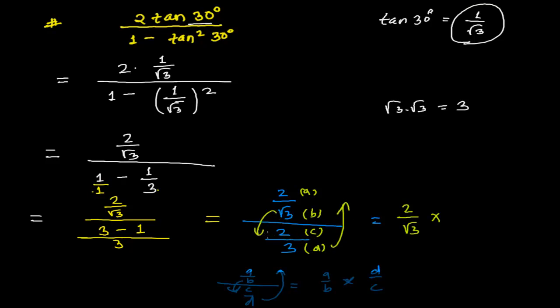And now this 2 and 2 will cancel out, and this 3 I can write now: √3 times √3 over √3. And this one √3 and one √3 will cancel out, and I will get √3 as my answer.